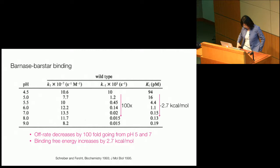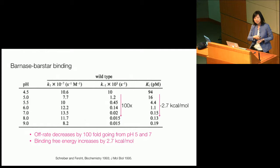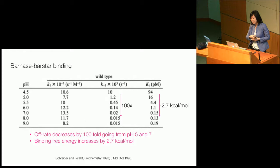What's shown here is a protein — a classical enzyme known as barnase — binding with barstar, so protein-peptide binding. And you can see here, the K_off value is hugely dependent on pH. In fact, from pH 5 to pH 7, the kinetics — this reaction speed — increased by 100-fold.